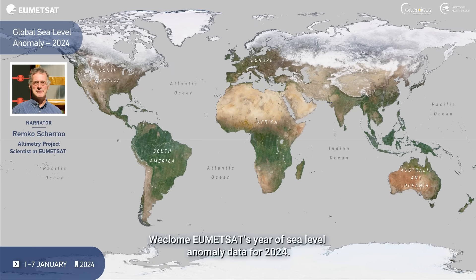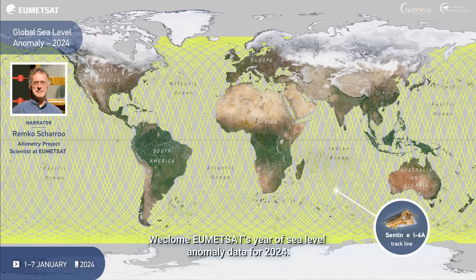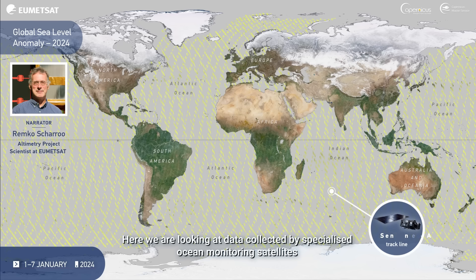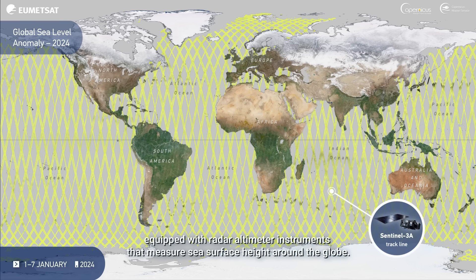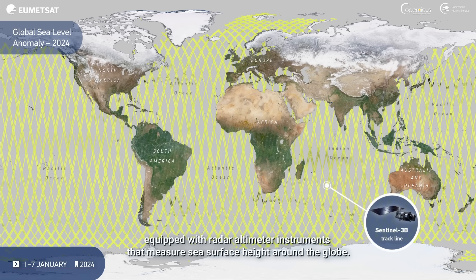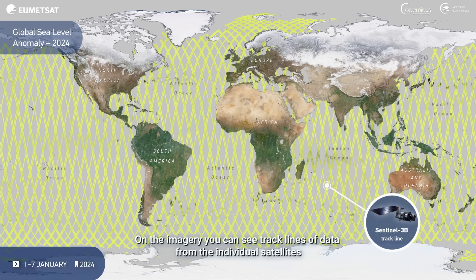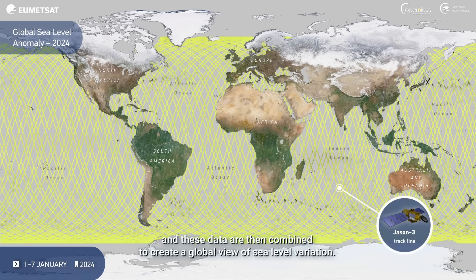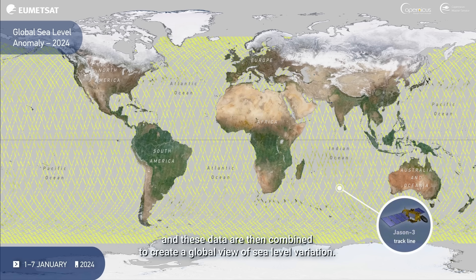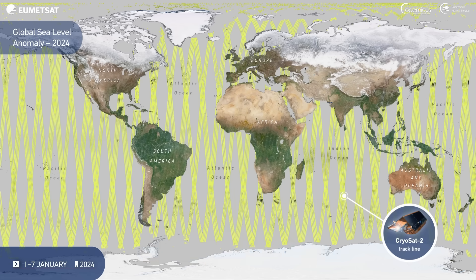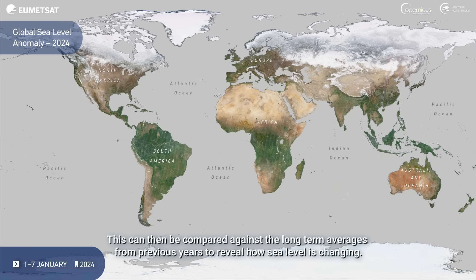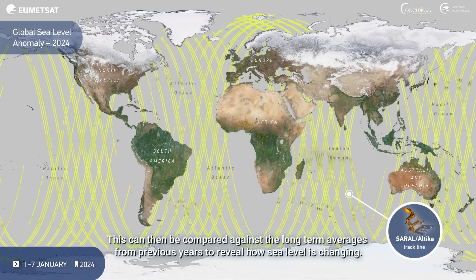Welcome to UMITSAT's year of sea level anomaly data for 2024. Here we are looking at data collected by specialised ocean monitoring satellites, equipped with radar altimeter instruments that measure sea surface height around the globe. On the imagery you can see tracklines of data from the individual satellites, and these data are then combined to create a global view of sea level variation. This can be compared against the long-term averages from previous years to reveal how sea level is changing.